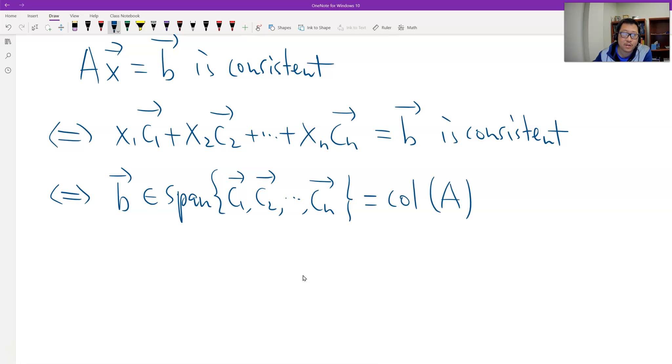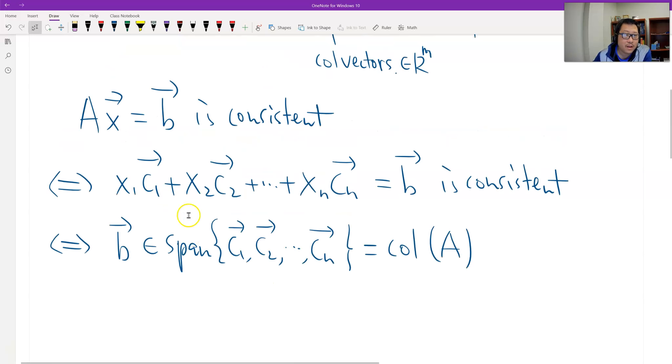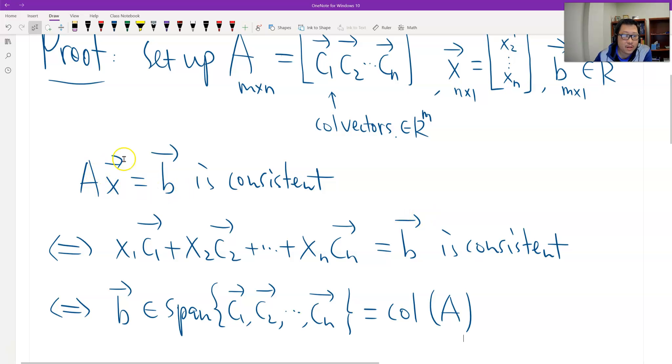Okay, so finally we have the results proved. The original linear system is consistent equivalent to the column vector b belongs to the column space of A. That's all. Thank you.